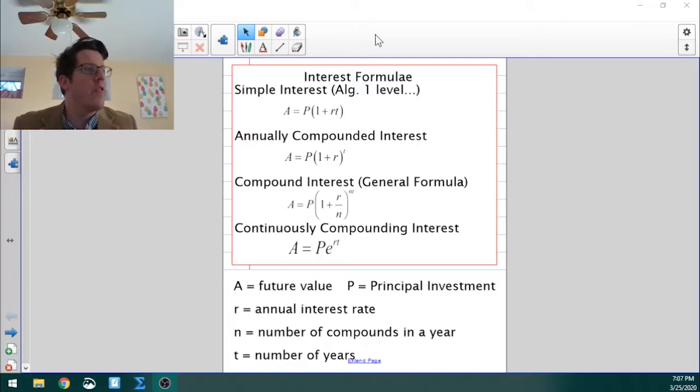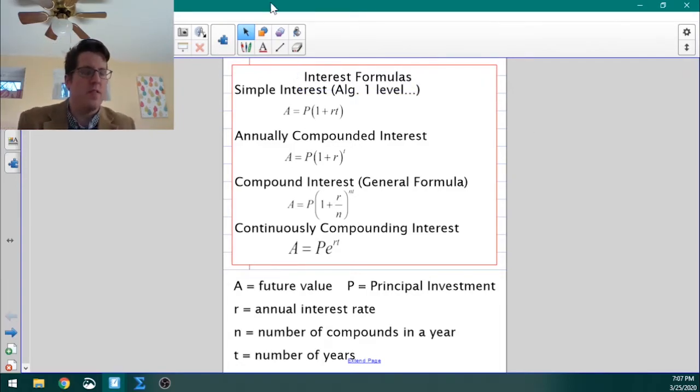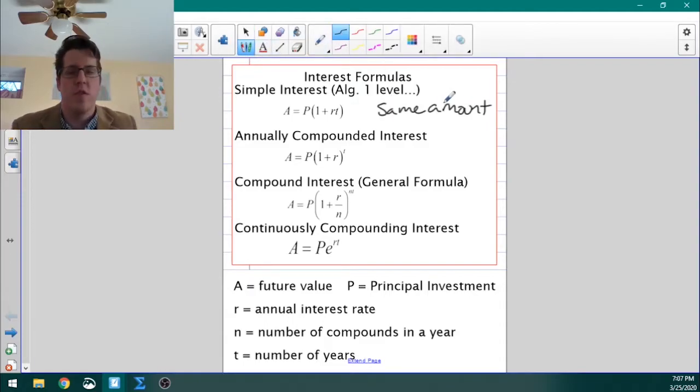Okay, here are the various interest formulas. Simple interest is interest where you get the same amount every year, or every time period, but I'm going to use a year as shorthand for a time period here. So, the easiest way to think about that is 5% simple interest on $100 is $5, $5, $5, $5.